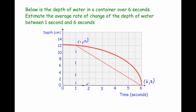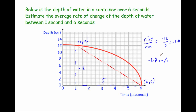We make it into a right-angle triangle, which has a run of 5 and a rise of -12, because the depth is going down — a negative gradient. Rise over run gives -12 divided by 5, which equals -2.4. The average rate of change of depth is -2.4 centimeters per second, meaning the container is losing on average 2.4 centimeters of depth every second between one second and six seconds.